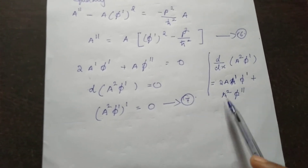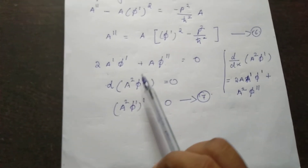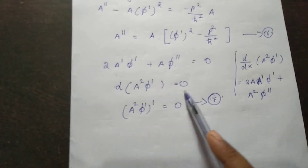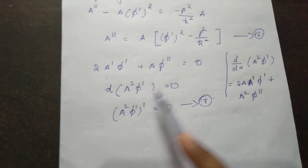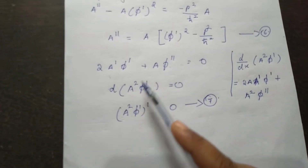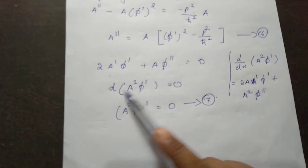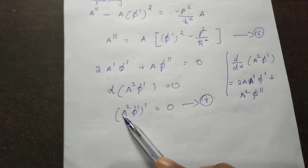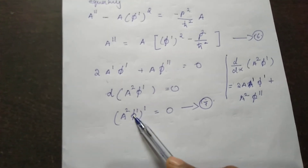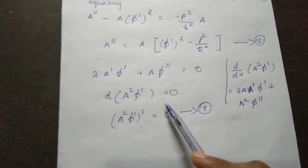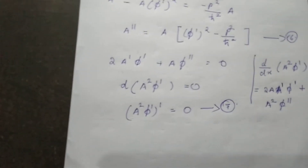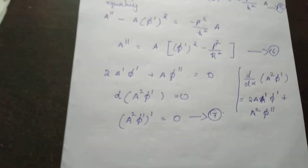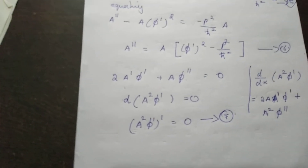From the imaginary part, we get d of (A squared phi dash) equals 0, that is, (A squared phi dash) whole dash equals 0. Put it as equation number 7.